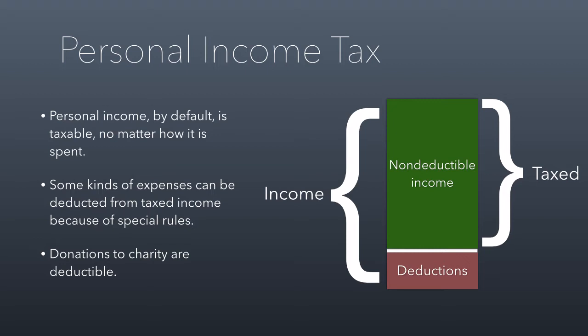The IRS and Congress have carved out specific expenses that are deductible from your taxes or non-taxable. For example, if I pay interest on a mortgage, the amount I spend on that interest is deductible from my income. With corporations, all expenses are taken away. With individuals, only certain expenses are taken out of the taxable amount. Donations to charity are one of those expenses that can be deducted — you remove it from the amount the IRS will use to calculate your income tax.